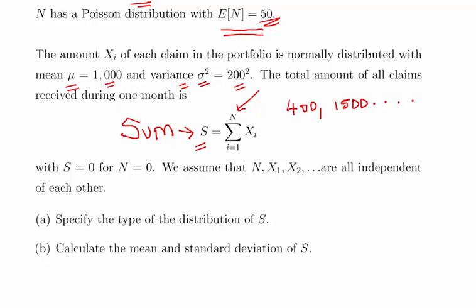With S equal to zero for N equal to zero, that's just a little caveat, and we assume that everything is all independent of each other. The two questions are: specify the type of the distribution of S, and calculate the mean and standard deviation of S.